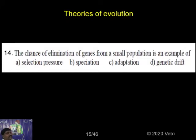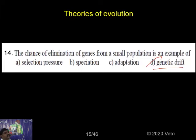Option D is the correct answer — genetic drift. The change of elimination of genes in a small population to another population is genetic drift. Option D is correct.